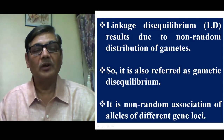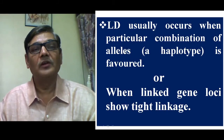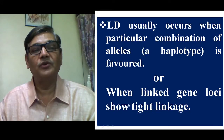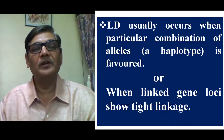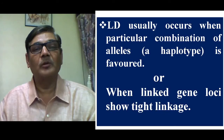LD is also due to non-random association of alleles of different gene loci. LD usually occurs when a particular combination of alleles — referred to as a haplotype — is favored, or when linked gene loci show very tight linkage. When two or more gene loci are very close to each other, crossing over will be very limited, and as a result, recombinant types will always be less, so all combinations will not be in equal proportion.